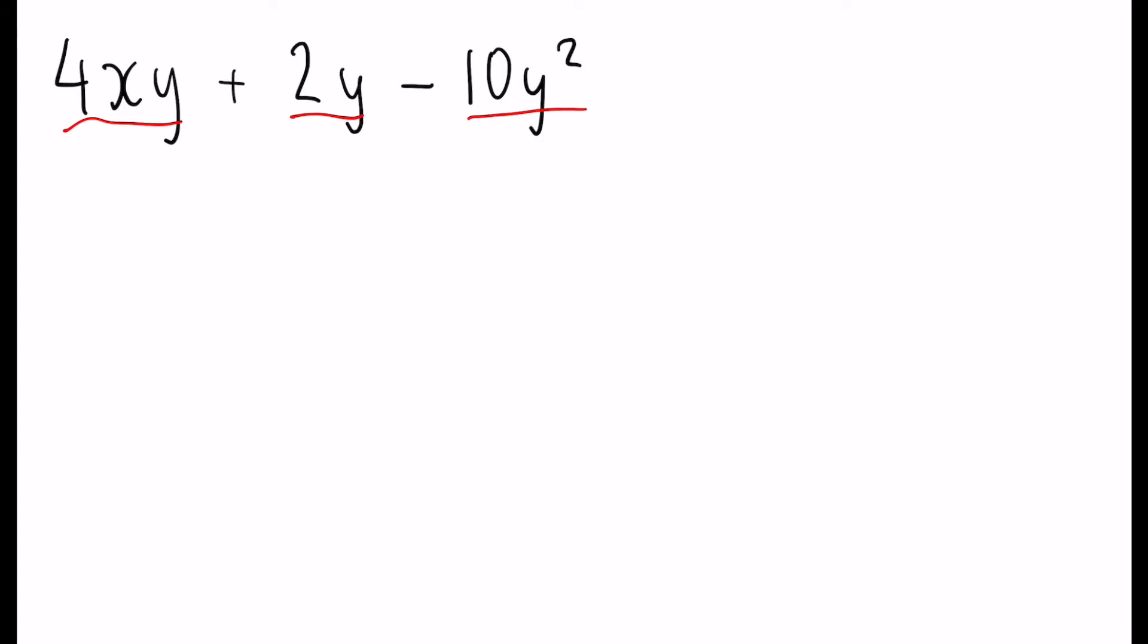Just like before, take a look at each of these numbers. Which number can we divide into each of these? So 4, 2, and 10. We can immediately see 2 divides into each of those. So outside the bracket, we're going to have a 2. We've got an x here, but we don't have an x anywhere else.